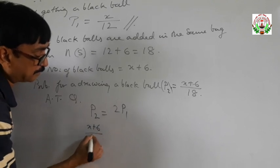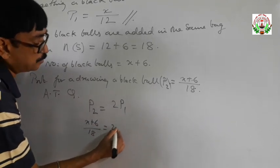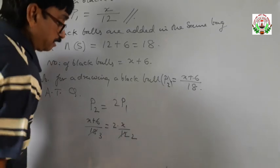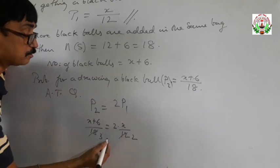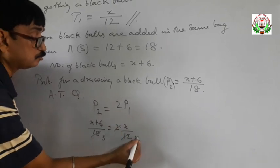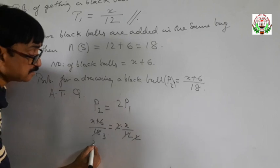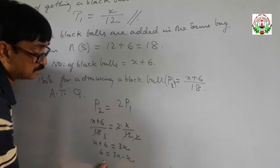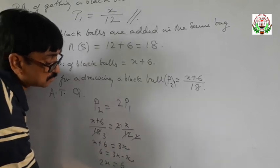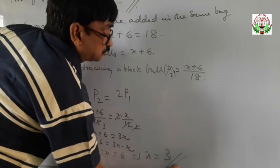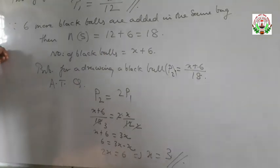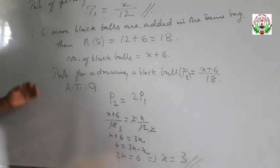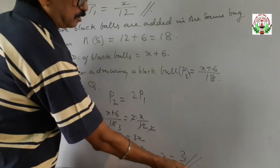So X plus 6 upon 18 is equal to 2 into X upon 12. We cross multiply: 6 threes are 18, 6 twos are 12. Simplifying, X plus 6 equals 3X. So 6 equals 3X minus X, giving 2X equals 6, which implies X equals 3.